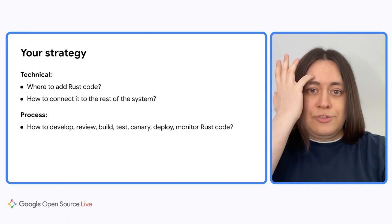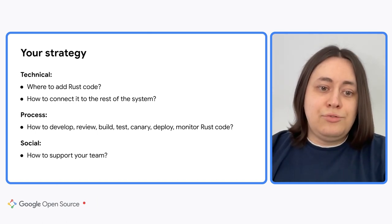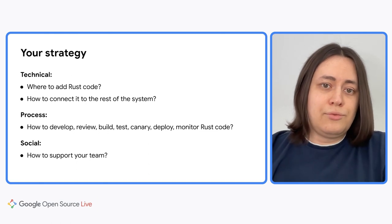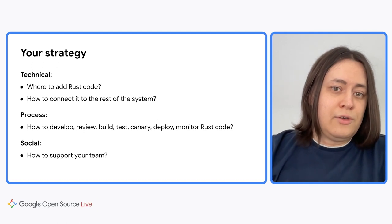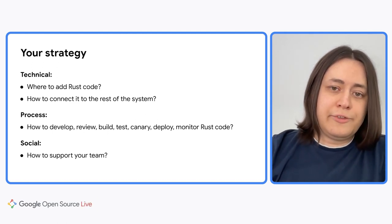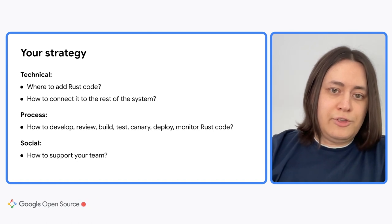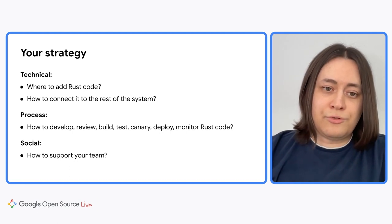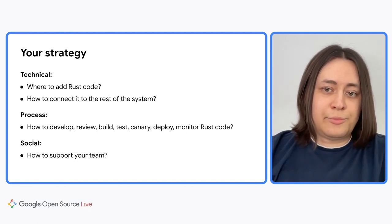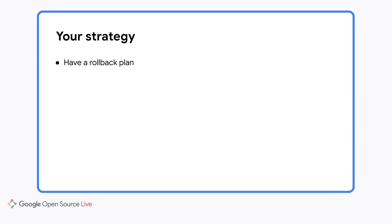And finally, introducing a new programming language to a team has a huge social component. What can you do to support your team through these major changes to the development and operational process? For example, you can consider what processes and playbooks you can build to reassure your team that Rust code will not cause extra stress, that Rust will not be the root cause of missed deadlines, and that insufficient Rust expertise on the team will not make outages last longer. I recommend that you prepare a rollback plan. I hope that you will not need it. However, having a rollback plan ready reduces the stress and fear of uncertainty in the team.